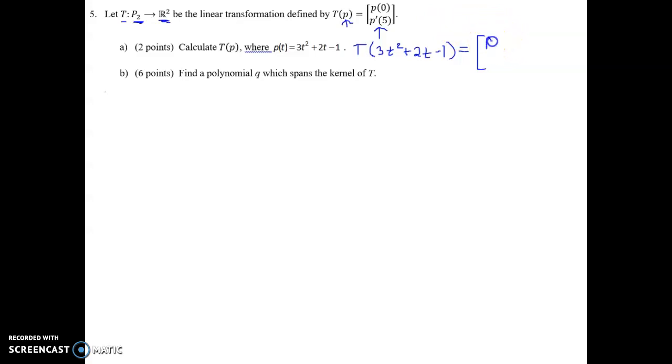Which would be 3 times 0 squared plus 2 times 0 minus 1, so we get negative 1.